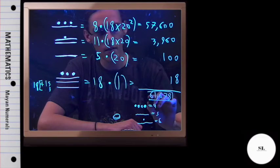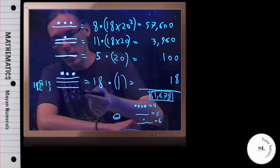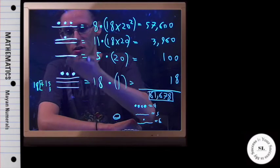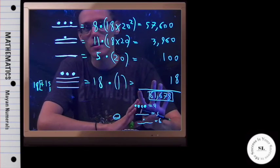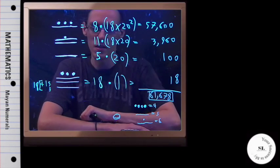So what does that mean? That means that this right here, these symbols arranged this way, is how the Mayans would have represented the number 61,678. And that is this example.